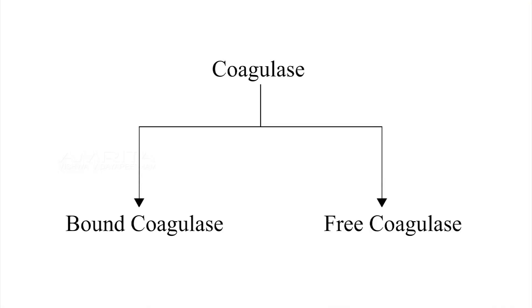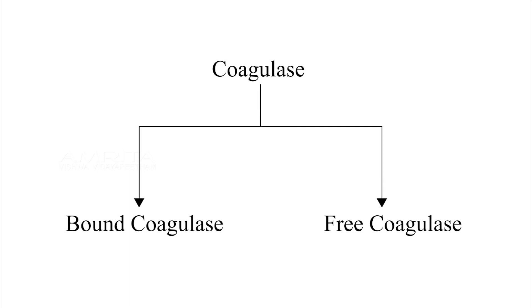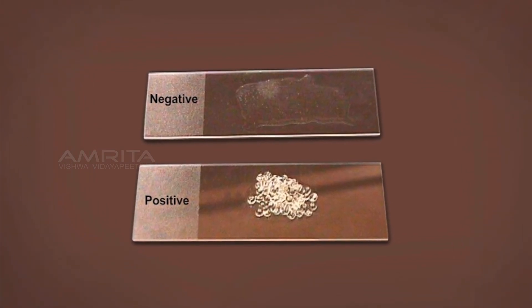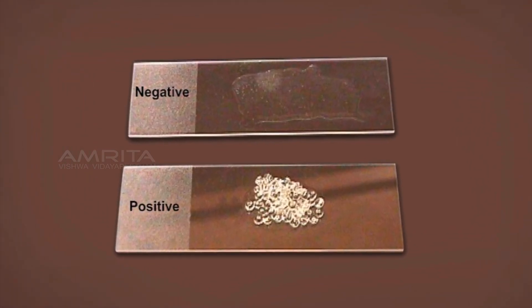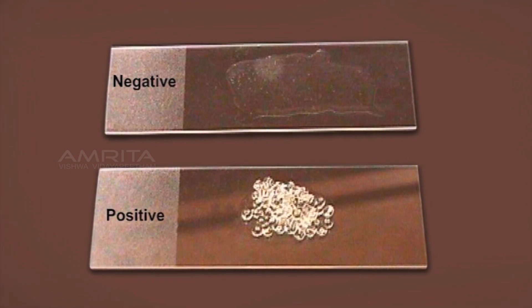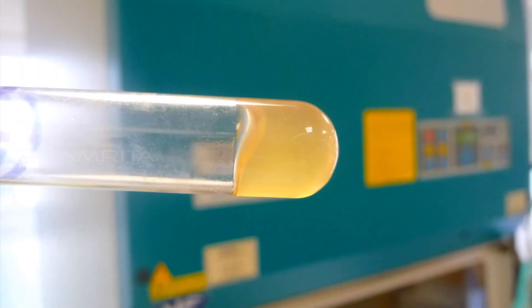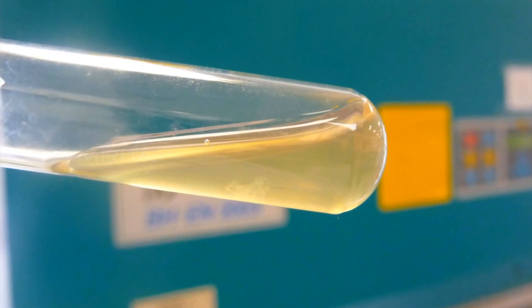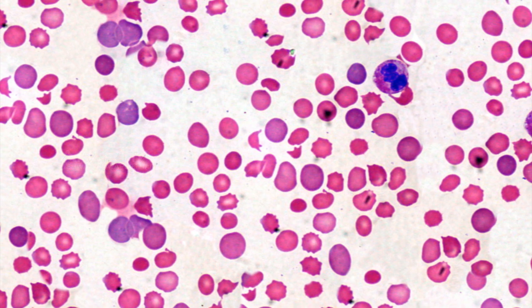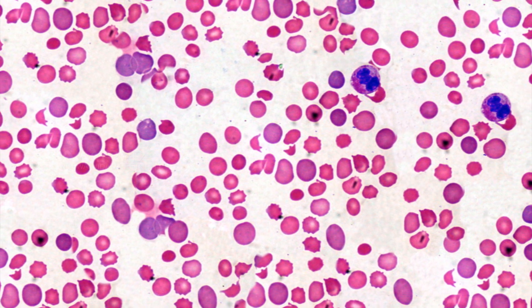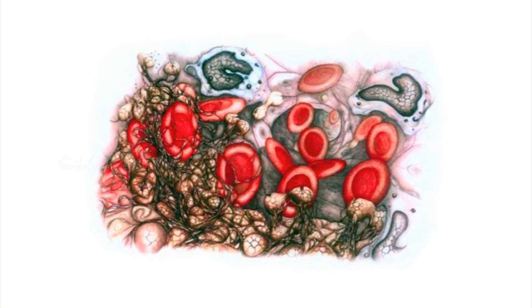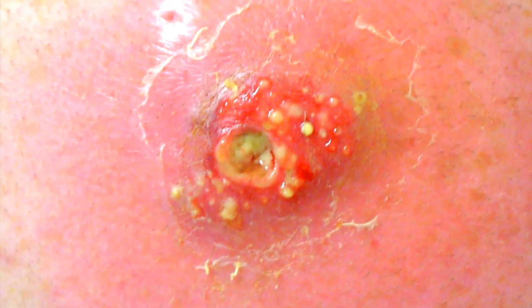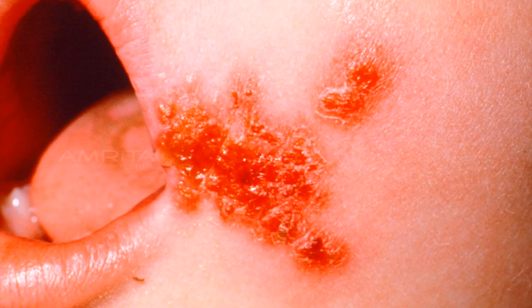Staphylococcus aureus produces two forms of coagulase: bound coagulase and free coagulase. Bound coagulase, otherwise known as clumping factor, can be detected by carrying out a slide coagulase test, and free coagulase can be detected by doing a tube coagulase test. Coagulase can tightly bind to the surface of Staphylococcus aureus and coat the surface with fibrin upon contact with blood. It is also proposed that fibrin-coated staphylococci resist phagocytosis, thereby increasing the virulence capability of the bacteria.